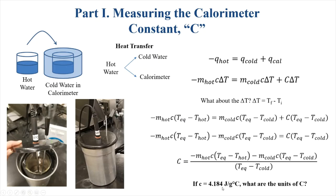Since lowercase c is 4.184 joules per gram per degree Celsius, we need to think about the units of big C. When you do the math, mass times specific heat capacity eliminates grams, and the temperature term eliminates degrees Celsius, leaving joules on top. Dividing by the temperature change — which has units of degrees Celsius — gives the calorimeter constant units of joules per degree Celsius. That's very important because it distinguishes it from the specific heat capacity c.